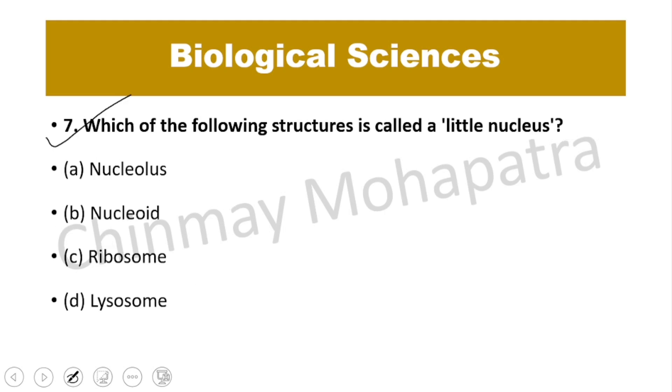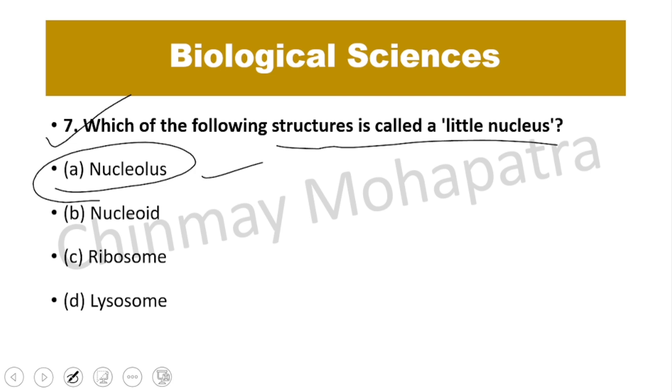Question number 7: Which structure is called the 'little nucleus'? The answer is the nucleolus, which is located inside the nucleus and appears as a dark particle.